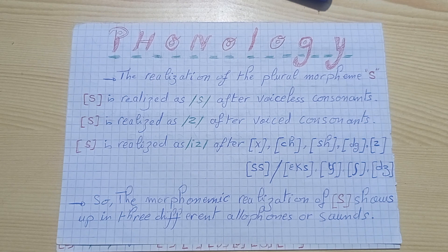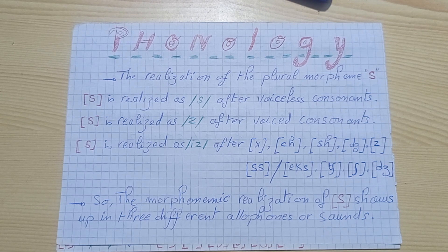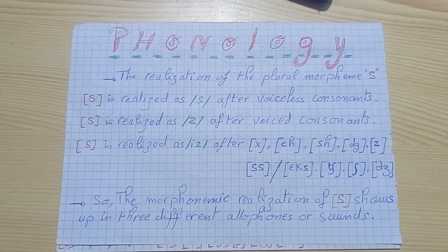For example, we have a word in singular and when we want to make this word plural we add the plural morpheme S. This plural morpheme S differentiates — the pronunciation or the realization of this sound differs from one word to another. Basically there are three rules in which this plural morpheme S differs from one to another.